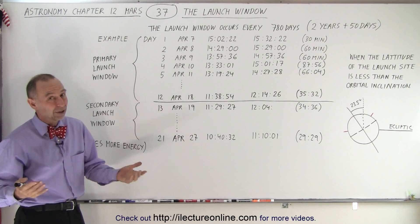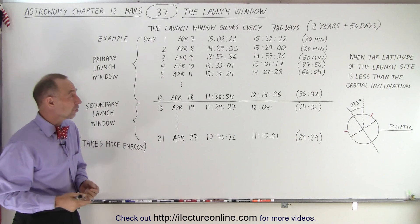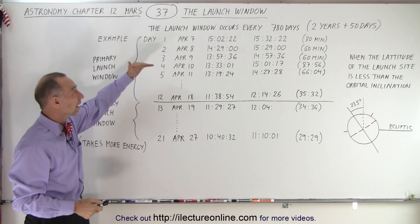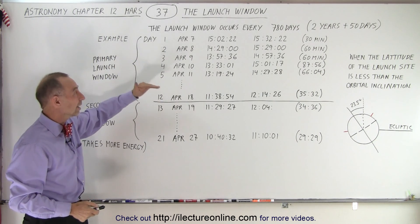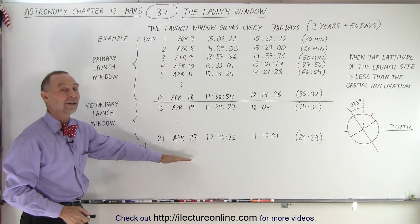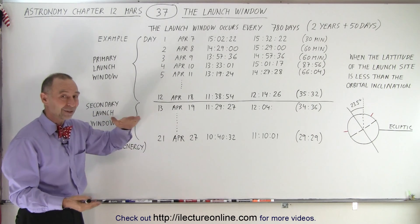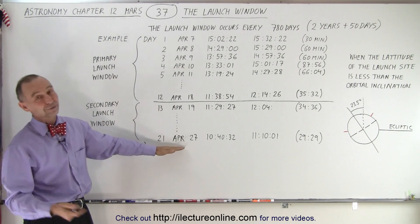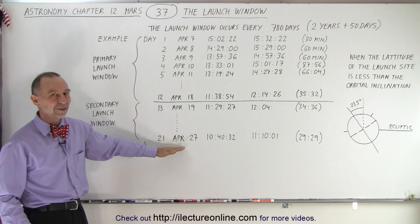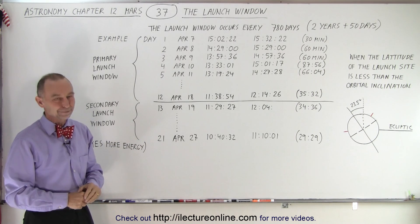If the weather is bad, you don't want to launch — you don't want to risk losing your spacecraft — so you wait for the next opportunity. Eventually, you'll run out of time, and if you can't make it within that launch window, you'll just have to wait another two years and 50 days before you can try again.